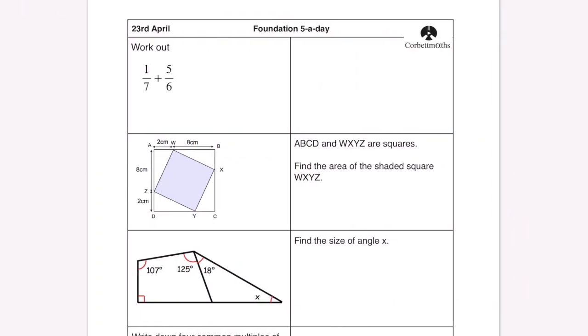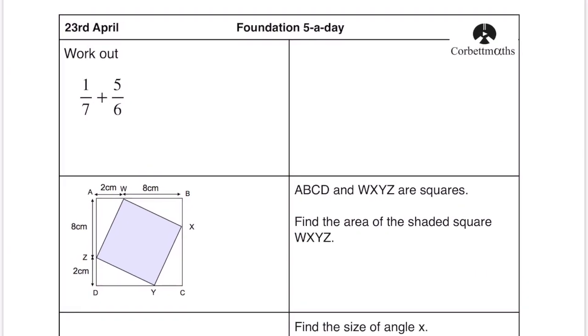Onto foundation. This is more of a GCSE style questions. If you're just working towards that 4 or the 5 this is where you want to look first. So work out a 7th plus 5 sixths. As always we want to find a common denominator so we multiply them together get 42 and if we cross multiply 6 times 1, 5 times 7, 41 over 42.